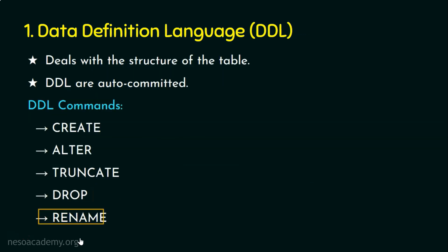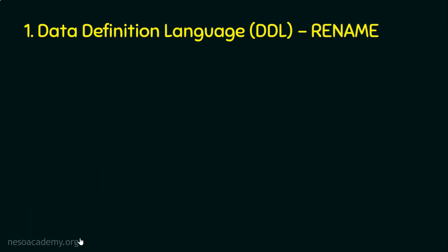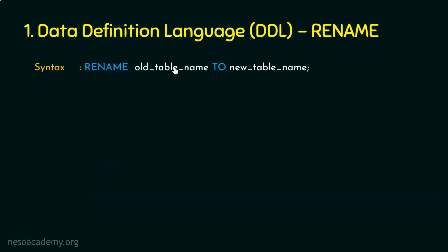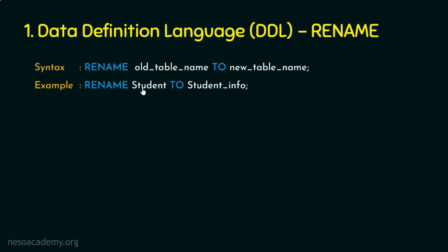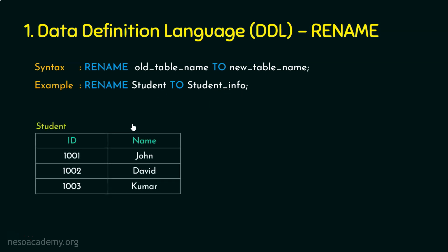Now let's see the RENAME DDL command. The syntax is: RENAME old_table_name TO new_table_name. For example, if our table is named student, we write: RENAME student TO student_info. If we have a table student with columns id and name, after executing this command the table is renamed to student_info with the same columns.